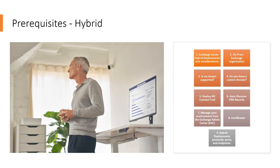Deploy the Azure Active Directory Connect tool to enable active directory synchronization with your on-premises organization — this is crucial to ensure identities are synchronized. Configure the Autodiscover DNS record for your existing SMTP domains in public DNS, pointing to your on-premises Exchange servers — to client access servers for Exchange 2010/2013, or to mailbox servers for 2016/2019. You can manage both your on-premises and Exchange Online environments from the Exchange Admin Center. Assigning Exchange services to a valid digital certificate from a trusted public certificate authority is also a main prerequisite.